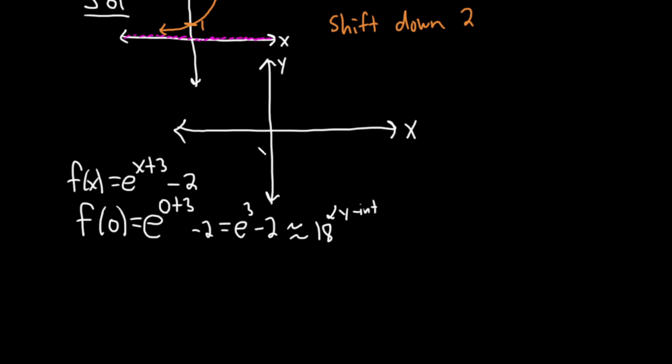As for the x-intercept, we set the entire function equal to 0. So we'll set e^(x+3) - 2 = 0. To solve this, we have to find x. We'll start by isolating the e. Add 2 to both sides. So we're at e^(x+3) = 2. And then to get rid of the e, we take the natural log of both sides.